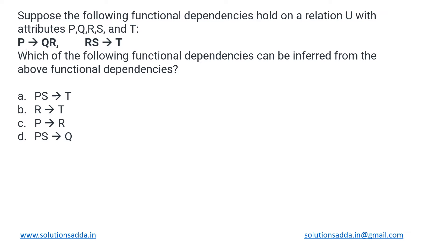This is a DBMS question based on functional dependencies. We have a relation U which is having the attributes P, Q, R, S, and T, and these are the two functional dependencies that hold on it: P→QR and RS→T. Based upon these, we need to determine which of these FDs can be derived from the given functional dependencies.